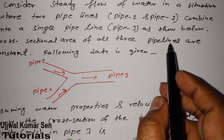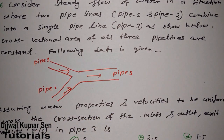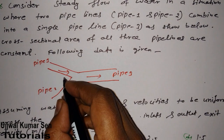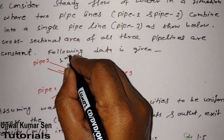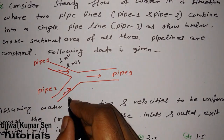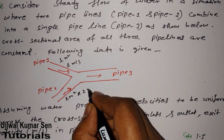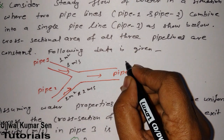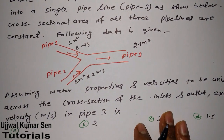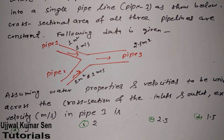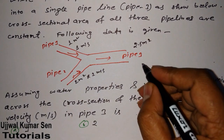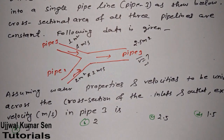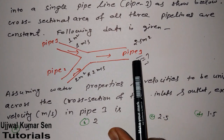The data given is: for pipe one, area is 1 meter square and velocity is 1 meter per second; for pipe two, area is 2 meter square and velocity is 2 meter per second; for pipe three, area is 2.5 meter square. Assuming water properties and velocities to be uniform across the cross-sections, we need to find the exit velocity in pipe three.